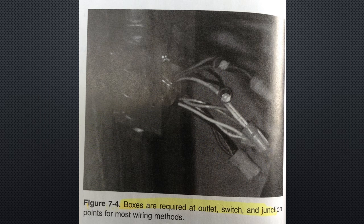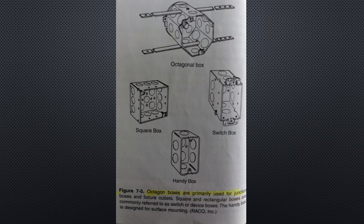Boxes: although there are some exceptions, a box is required wherever conductors are spliced and connected. Boxes serve as pull points and the location of conductor terminations. Figure 7-4 shows an example, although not so clearly. There are numerous types of boxes. They are classified on the basis of shape, size, use, and material. Figure 7-5 shows four of the most popular shapes.